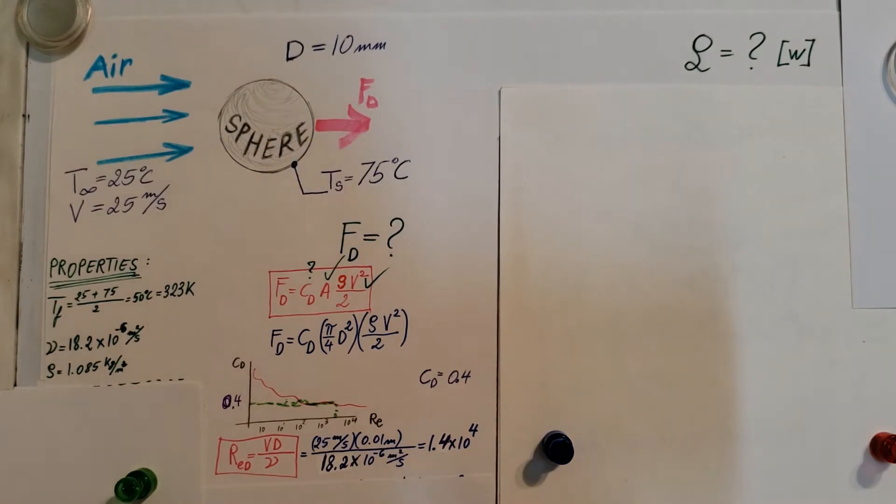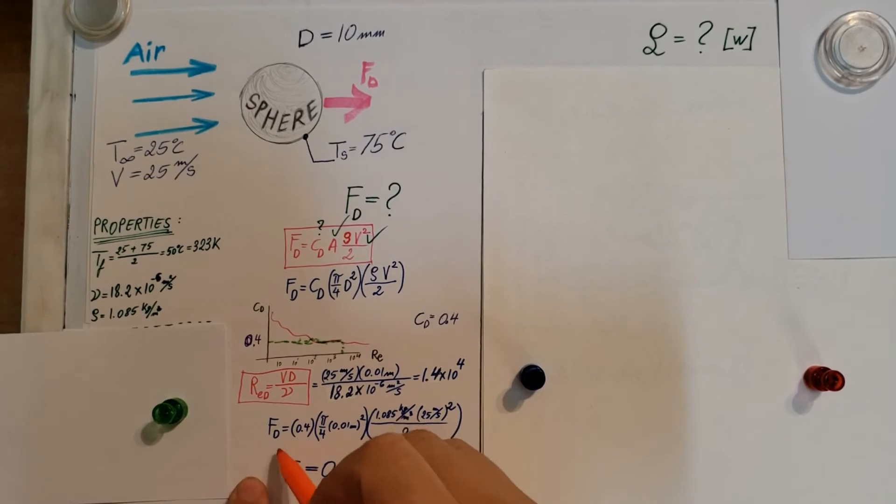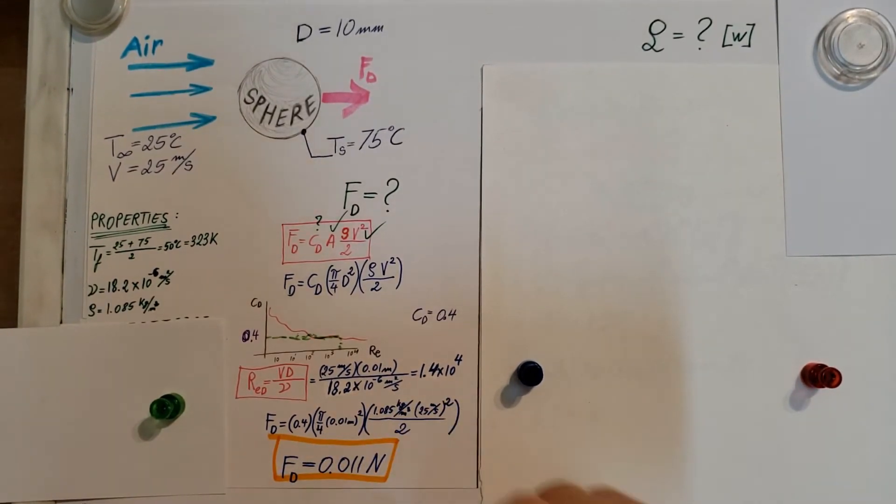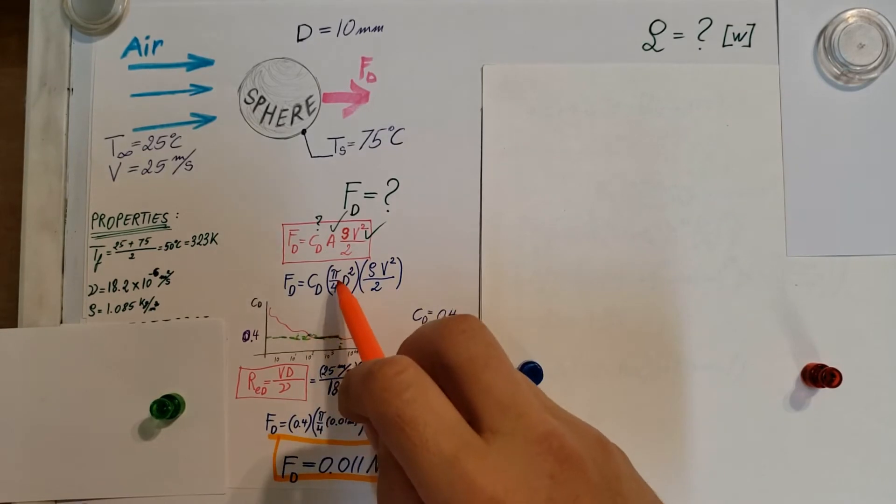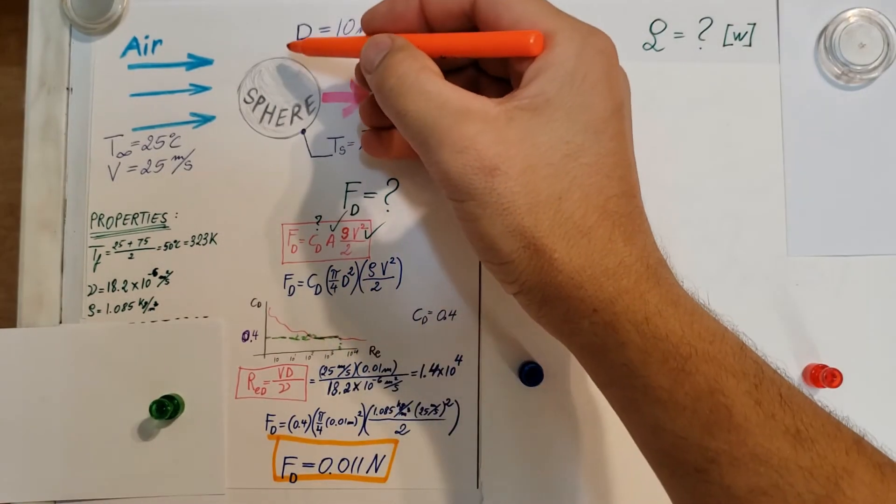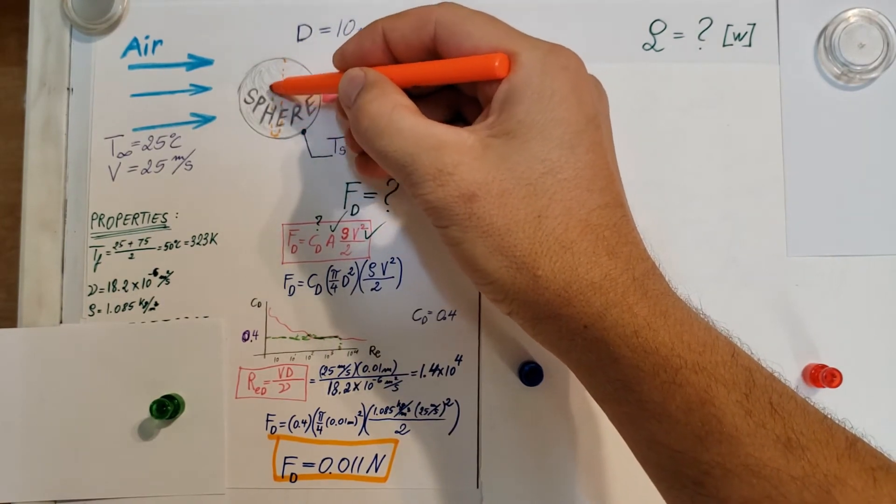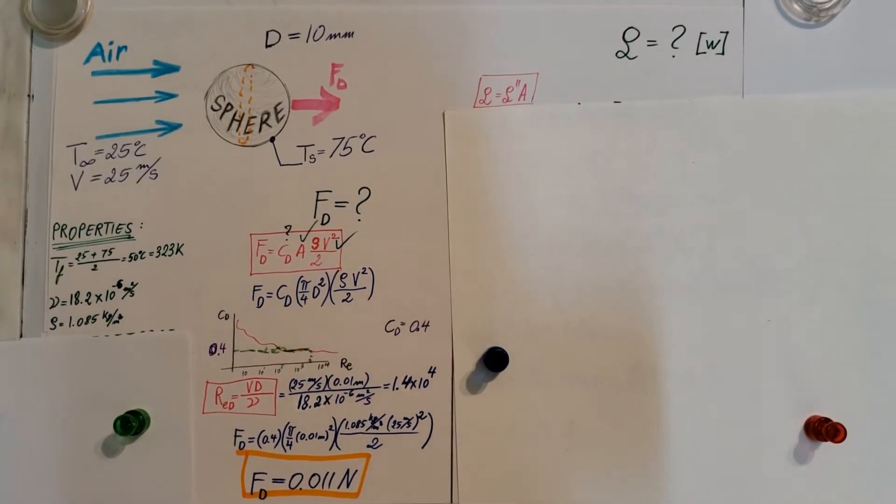Here it is, our drag force on this sphere is 0.011 Newton. Also you can see, I forgot to mention, but the A is pi over 4 D squared, which is basically just the area straight down the middle of my sphere, the one that's facing the wind.